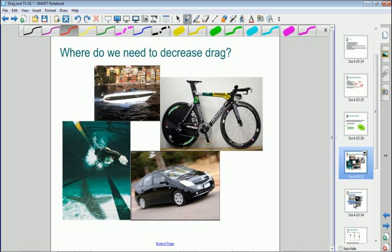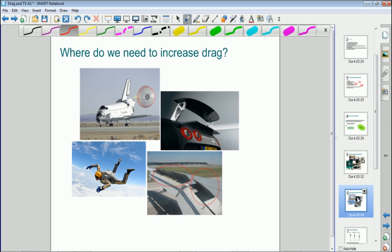So there are other situations where we need to maximize drag, and these are usually to do with controlling speed or slowing down, getting maximum deceleration out of an object. All of these, apart from the skydiver, are very, very similar and involve braking. Here we've got the space shuttle, which has a parachute to slow it down once it lands, so you're maximizing the drag by increasing the surface area of the object.